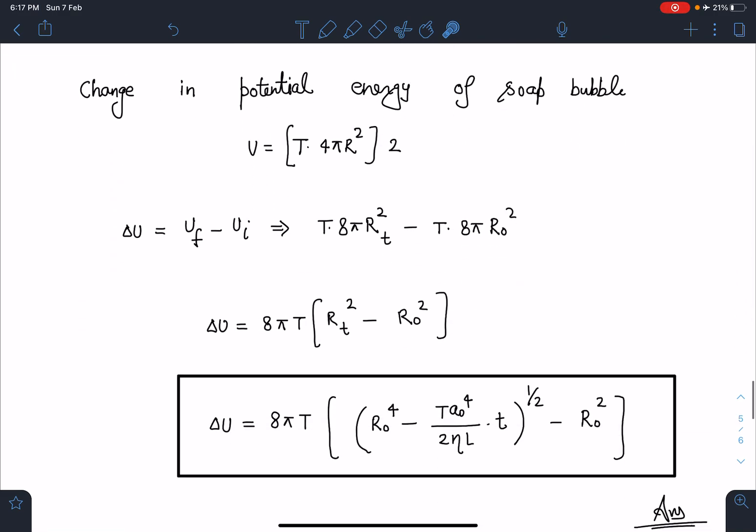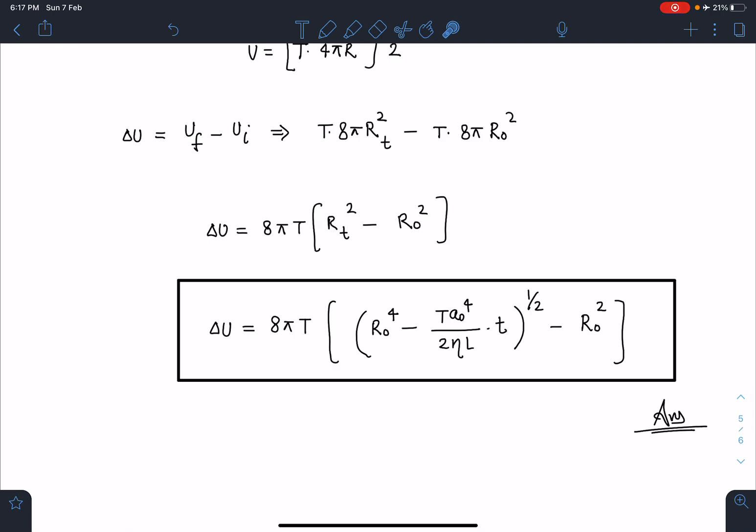Rₜ value I can substitute from this equation. When I substitute this value I am going to get this ΔU as 8πT times [R₀⁴ - Ta₀⁴/2ηL × t]^(1/2) - R₀². This is going to be the final answer for this problem.